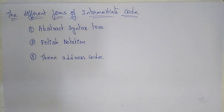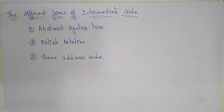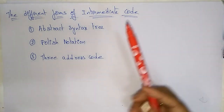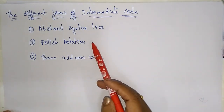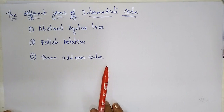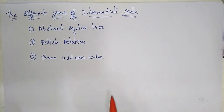Hi friends, welcome back. Let's continue with the intermediate code in compiler design. In the previous video I explained what exactly the intermediate code was. Now let's see the different forms of intermediate code. The intermediate code can be represented in three forms: one is the abstract syntax tree, two is polish notation, and three is three address code.